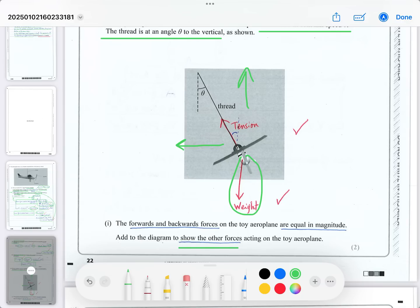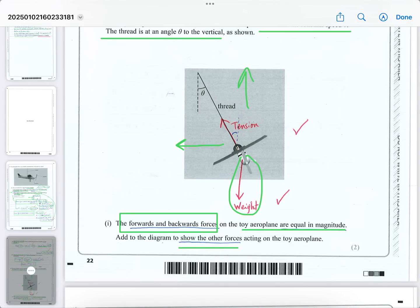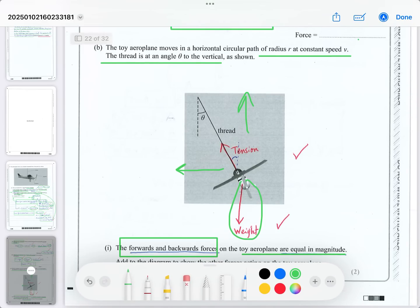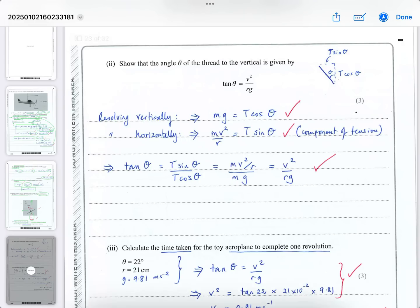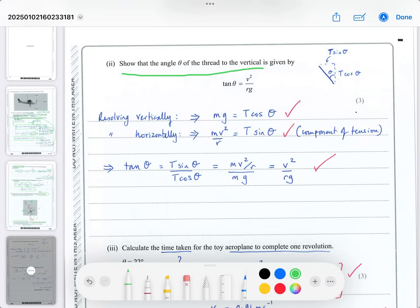You can also work out the upward tension component balancing the weight. Add these forces to the diagram. The forward and backward forces are equal in magnitude, so there's no acceleration - it moves at constant speed in a horizontal circle. Then show that the angle θ is given by a specific equation.